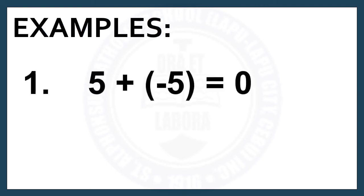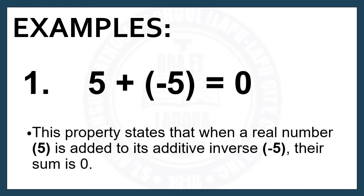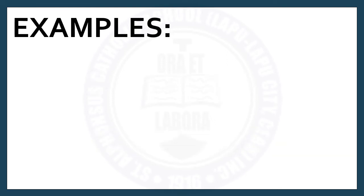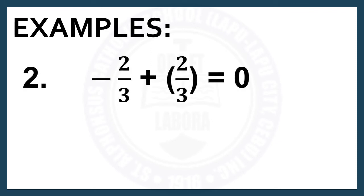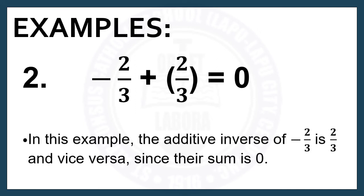Number 1: 5 plus negative 5 is equal to 0. This property states that when a real number, 5, is added to its additive inverse, negative 5, their sum is 0. Number 2: Negative 2 over 3 plus 2 over 3 is equal to 0. In this example, 2 over 3 is the additive inverse of negative 2 over 3 because their sum is 0. So when you add the additive inverse to any given number, the sum is always 0.